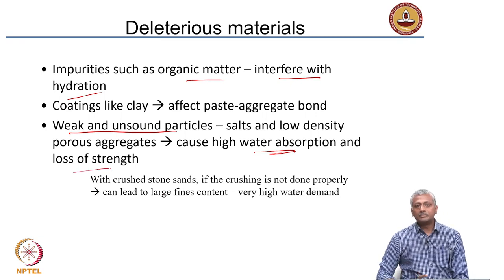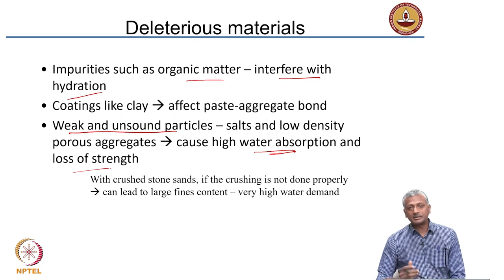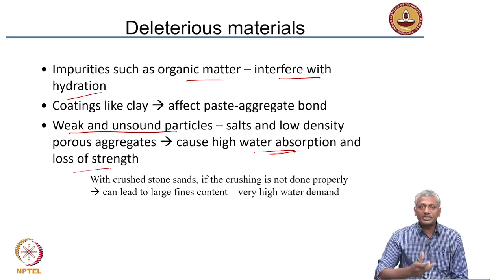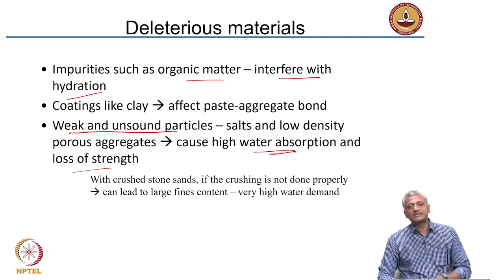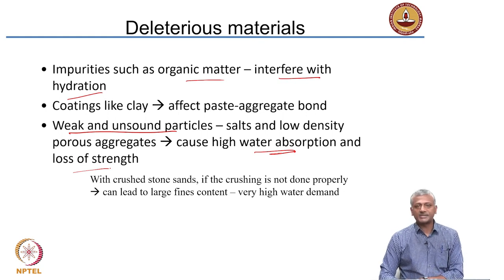Increasingly if you go to a construction site, you will find that very few people are using river sand. In Tamil Nadu, and in most of India, river sand is banned — or dredging of rivers for mining sand is banned in most states. As a result, more and more people are shifting towards crushed stone as a source of sand.